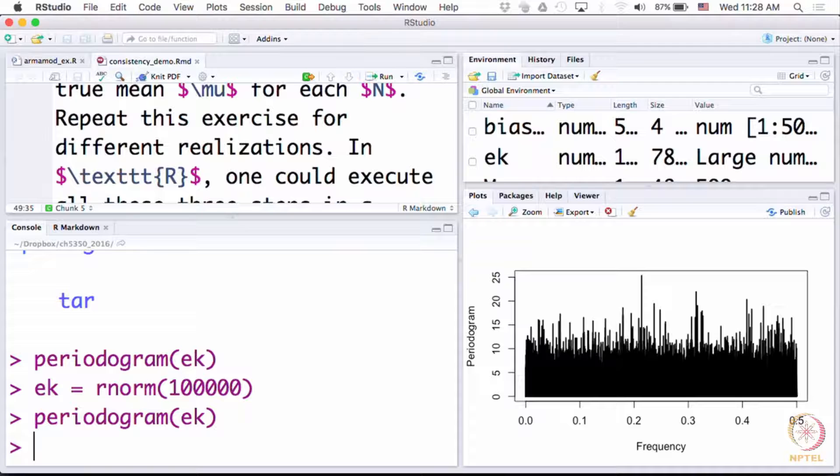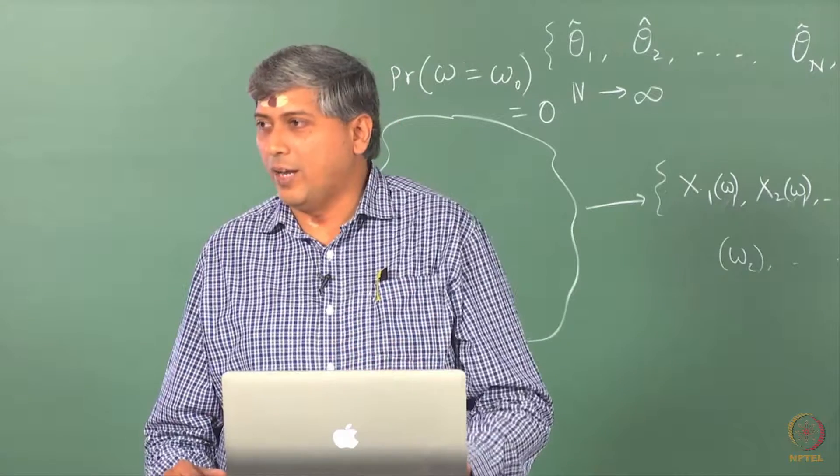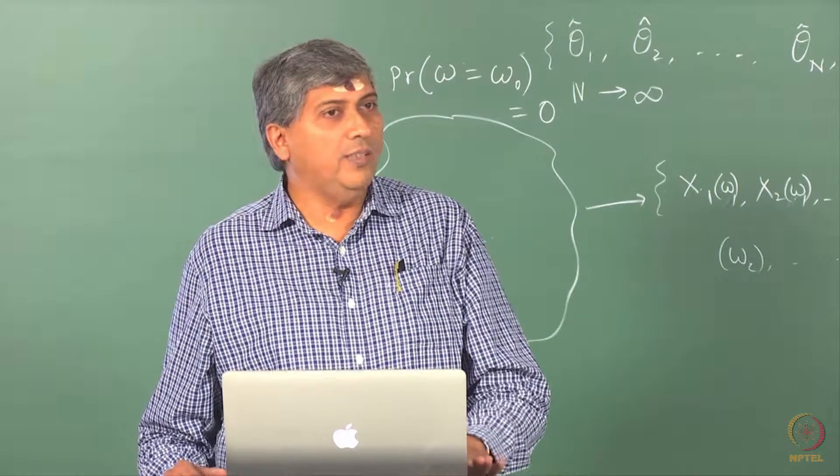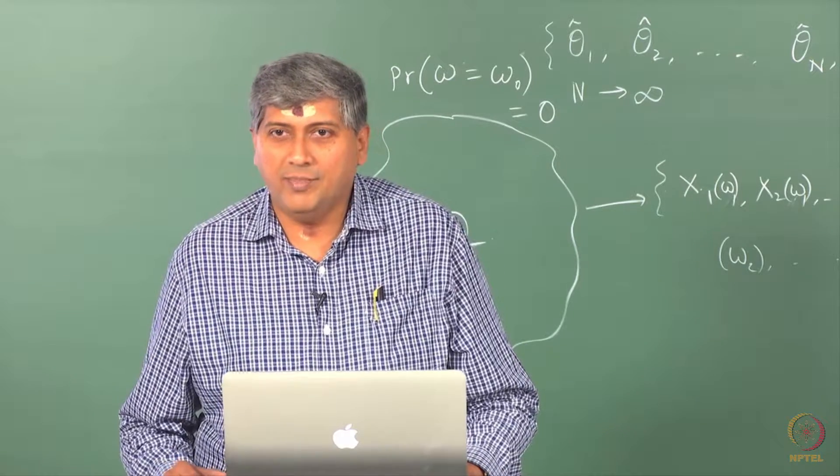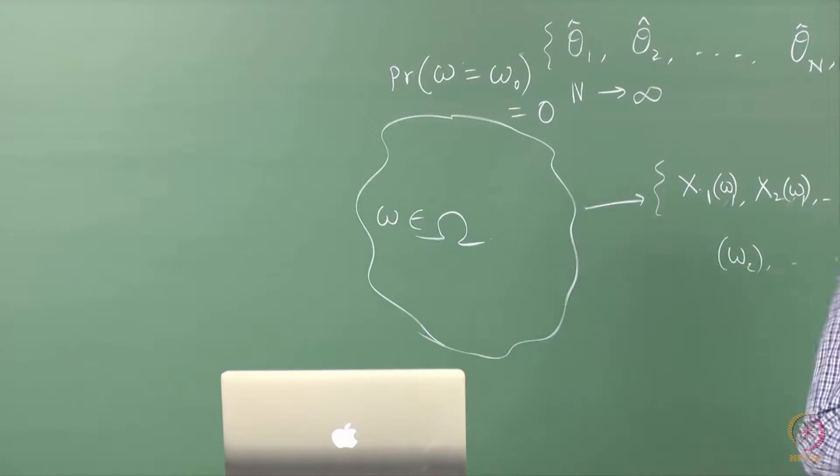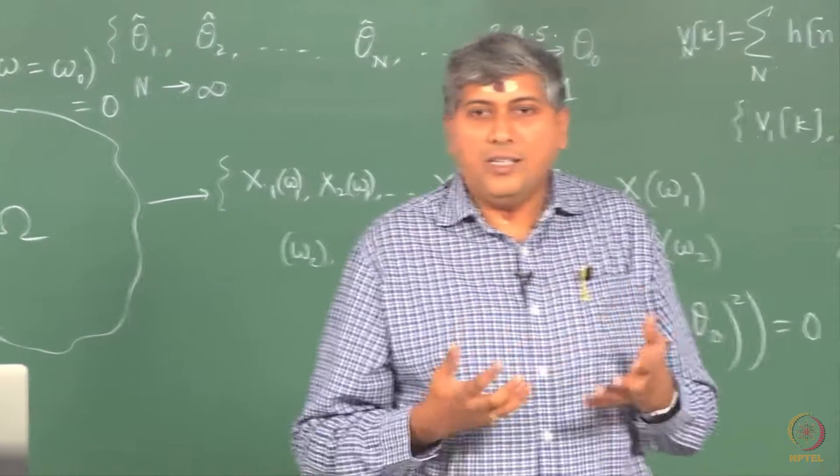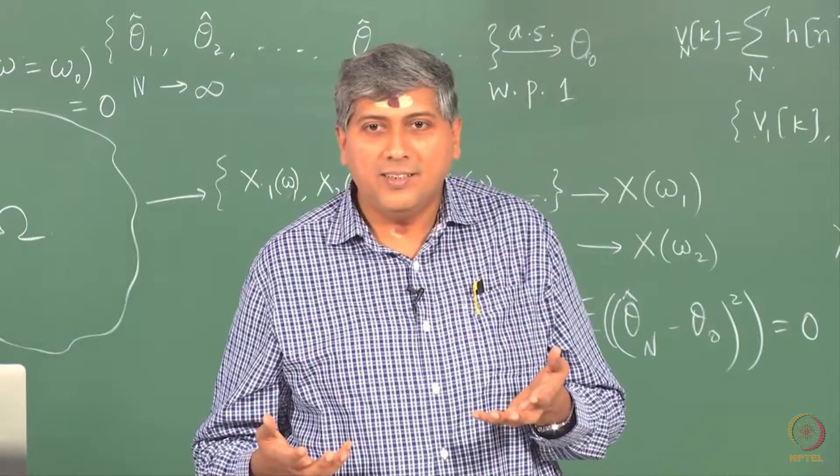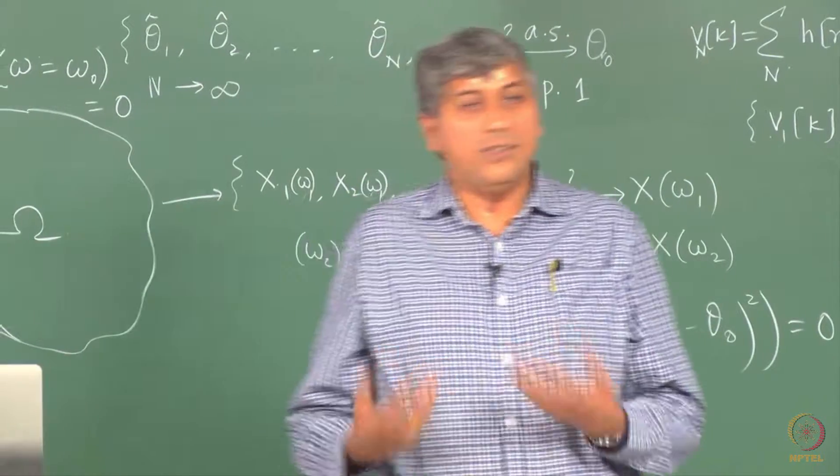Did it improve? You cannot say it got worse, it is only looking more dense because the frequency spacing has come down. The number of points on the x-axis has increased. But of course you can say that it has not gotten better. Why is this happening? Because this periodogram estimator is not a consistent estimator.